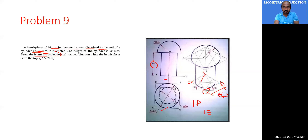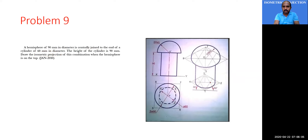Using the four-center method: from corner three draw a line to the center of the opposite side, and from corner one draw a line to the opposite center. This gives you the four centers — first, second, third, and fourth center — and you can complete the isometric projection of the bottom face of the cylinder.